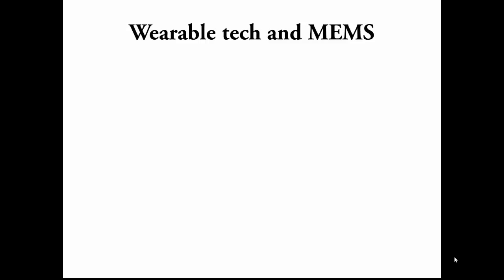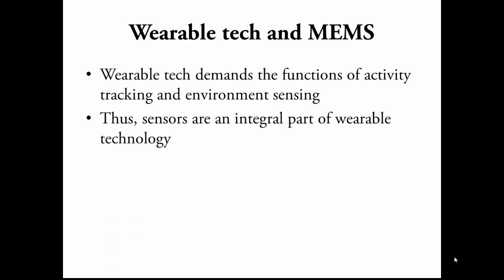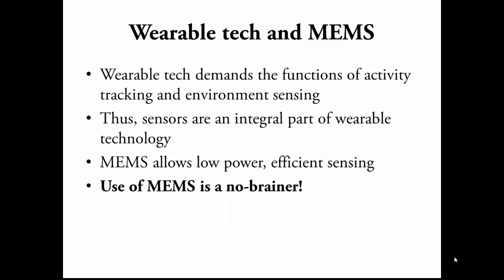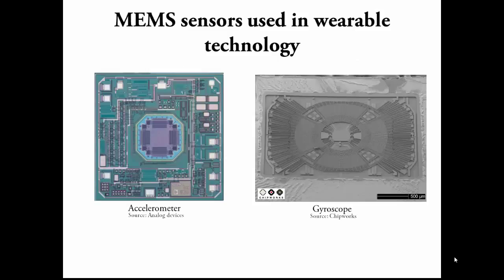Let's talk about why we need MEMS in wearable devices. Since wearable technology requires the function of activity and environment monitoring, it needs sensors. Since power consumption is a problem for portable electronics, MEMS offers an effective low power solution for this purpose. The most important and widely used sensor in wearable devices is the accelerometer. The gyroscope is usually used in conjunction with the accelerometer to provide complete positional information that is crucial for motion tracking. The accelerometer chip shown on the left by Analog Devices consists of the MEMS sensing structure in the middle, along with the required signal conditioning circuitry.